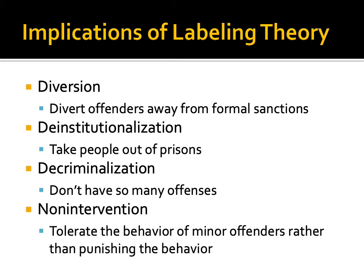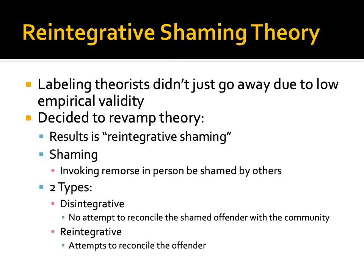Like most theorists, once they start testing their theory and realize it has really weak empirical validity, they don't just abandon it — they fix it and make it better. The way labeling theorists chose to fix it was by developing reintegrative shaming theory. They decided to revamp the theory, and the result is reintegrative shaming.